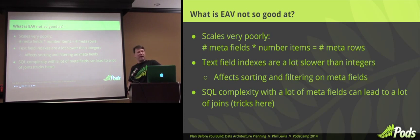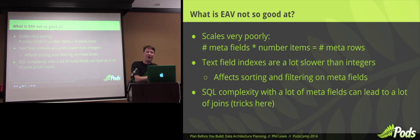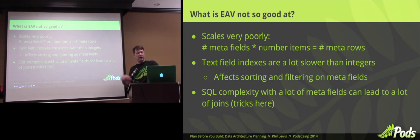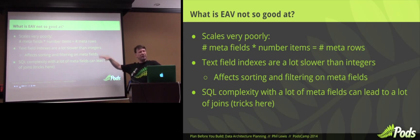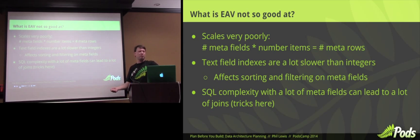But metadata is not great for everything. It scales very, very poorly if you get a lot of metadata. The number of meta fields attached to an item times the number of items — because there's one row for each — is the number of meta rows you end up with. If you have a thousand items and 50 pieces of meta, you now have 50,000 rows in your meta table, so it does not scale well at all. Text field indexes — which is how meta value works — if you need to do any sorting or filtering with a lot of meta, they're slower than numeric indexes. If you need to search for what color, like finding only the black things stored in meta, it's a whole lot slower. And the SQL complexity can go through the roof — you can end up with a whole lot of joins each time you go to the meta table for a different piece for the same item.